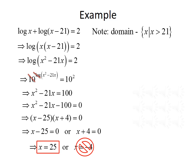Finally, we compare these two solutions with our domain. Since x must be greater than 21, x equals 25 is a solution, but x equals negative 4 is not.